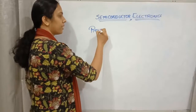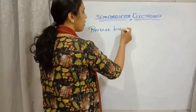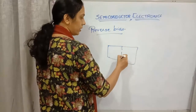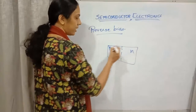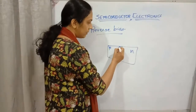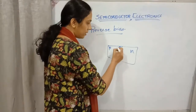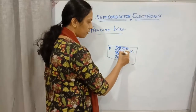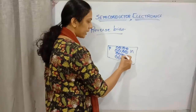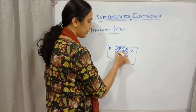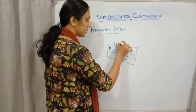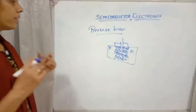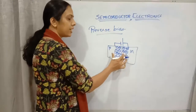In the case of a PN junction, because of drift and diffusion, in the P-side negative ions will be forming, and at the N-region positive ions are forming. Because of these negative and positive ions, a potential difference develops across it — this is negative and this is positive. This is the potential barrier.